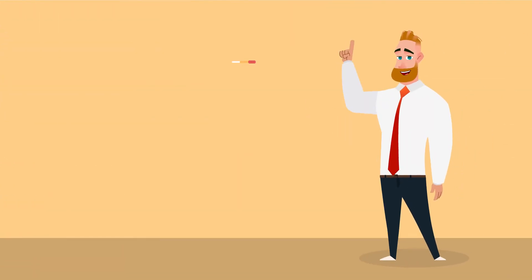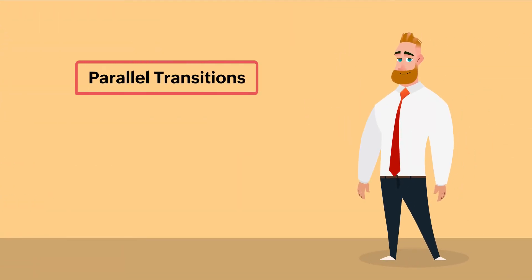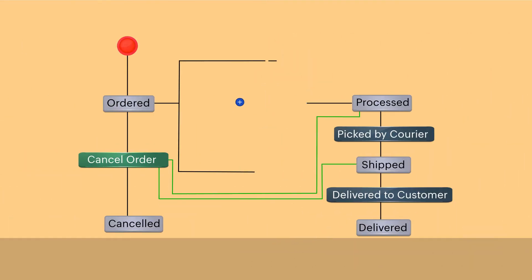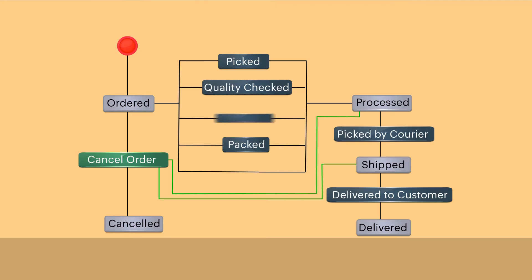Next, let's talk about parallel transitions. We can configure parallel transitions if a process must fulfill multiple transitions to pass from one stage to another. Some business use cases need to complete multiple tasks to move on to the next stage. In the same example that we discussed earlier, picking, packing, quality check, quantity check, and labeling are the various actions that must be done in order to move from the ordered to the processed stage.